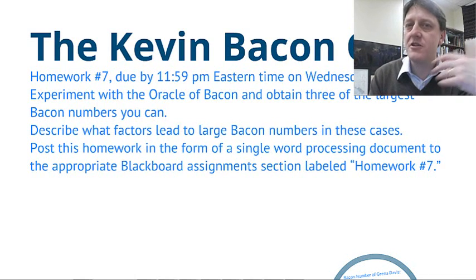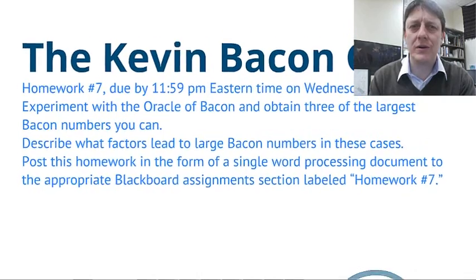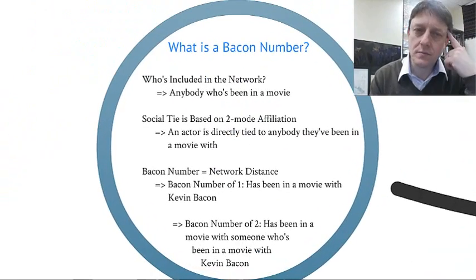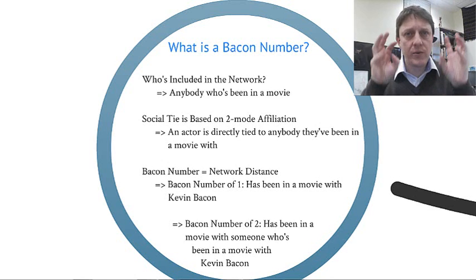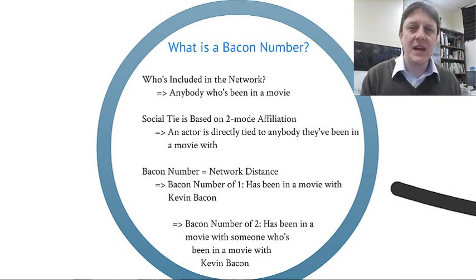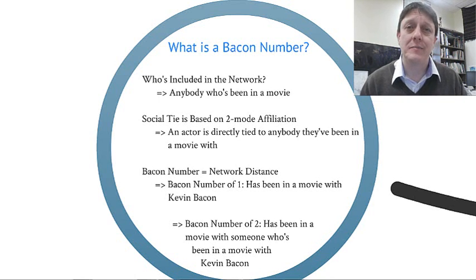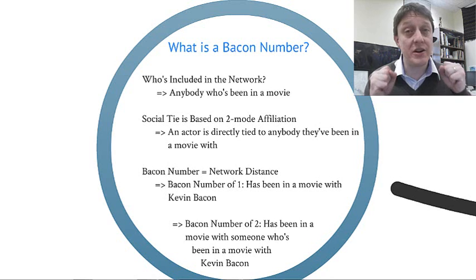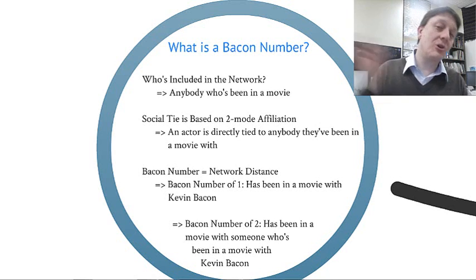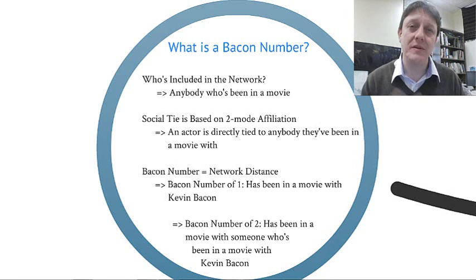Let's do a little bit of consideration of what Kevin Bacon numbers are. What is a Bacon number? What is the Bacon game? Well, first, when we're thinking about a network, we have to think about who's included in the network and who isn't. The standard here is clear: anybody who's been in a movie is in the network that involves and measures Bacon numbers. In that network, there are social ties based on affiliations. In other words, this is a two-mode network, which is turned into a one-mode network — you should be familiar with that from our previous lecture.